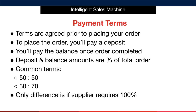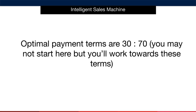You'll also see a 30-70 quoted very often, and either of these should be generally expected. Now there are times when the supplier will require 100% of the shipment value. You might assume that this isn't normal practice, however if the order is particularly small then it makes economic sense for the supplier to ask for this. The optimal payment terms are 30-70, though the reality is that you may not start here but you'll work towards this with your supplier over time, or you can suggest these terms if you feel that your order isn't particularly small.